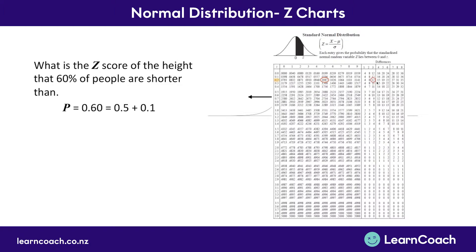We can now read off our z-score. The first two numbers are 0.25, and then we add on the little 12, which is under a 3. So our final answer would be a z-score of 0.253. Now that we know our z-score, we've found our answer — that is the z-score of the height that 60% of people are shorter than.